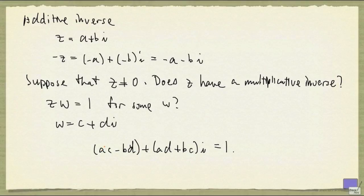But now if we compare this on the left hand side with the right hand side, I will need ad plus bc to be 0, since the right hand side is a real number. And I will need ac minus bd to be equal to 1. And we can now solve for c and d in terms of a and b.